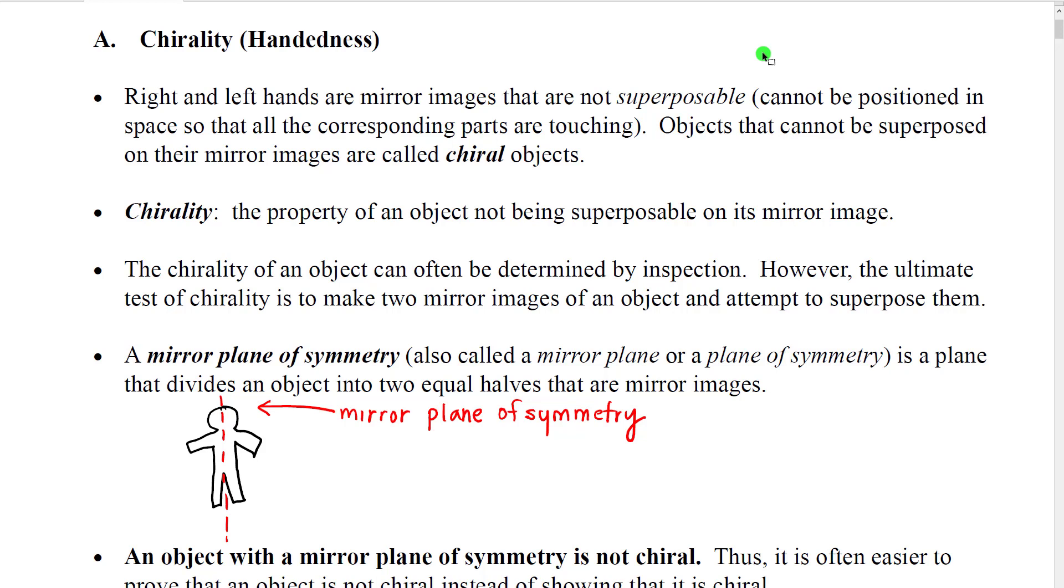The chirality of an object can often be determined by inspection, like our hands. However, the ultimate test of chirality is to make two mirror images of an object and attempt to superpose them. And this may be something that we will be forced to do in some circumstances.